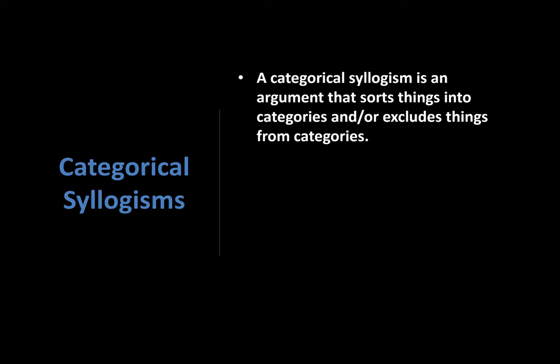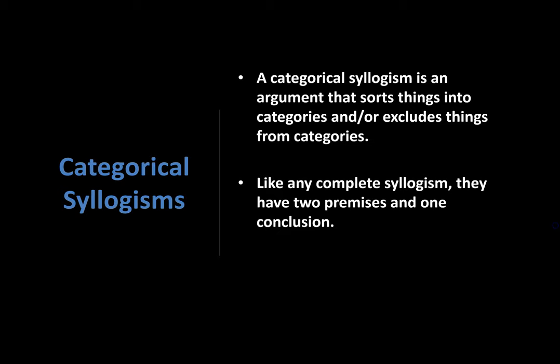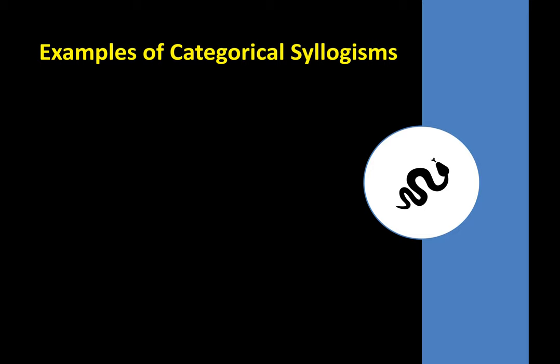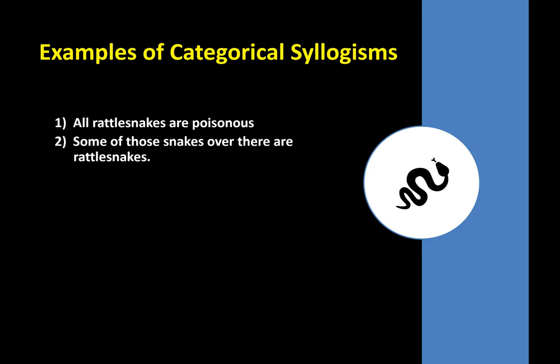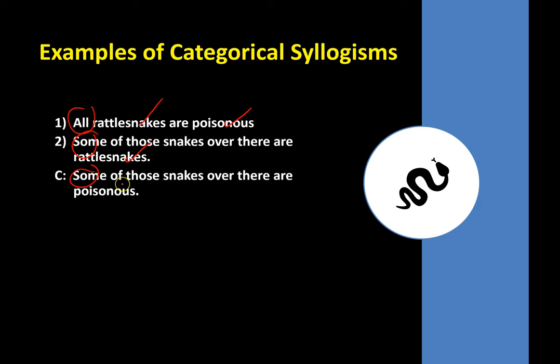Like any complete syllogism, categorical syllogisms have two premises and one conclusion. The giveaway words for a categorical syllogism are 'all,' 'some,' and 'no.' When you see those words repeated along with repeated categories throughout the argument, you know you're dealing with a categorical syllogism. For example: all rattlesnakes are poisonous; some of those snakes over there are rattlesnakes; therefore, some of those snakes over there are poisonous.